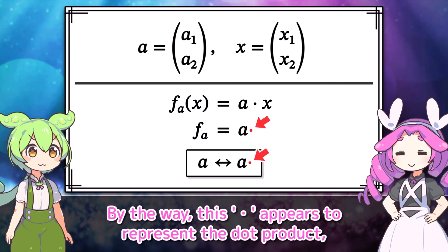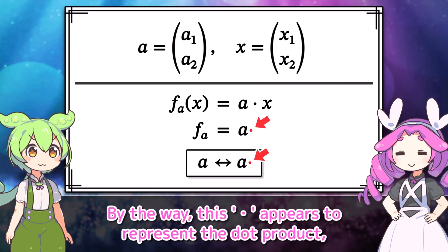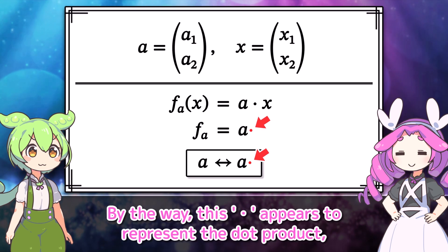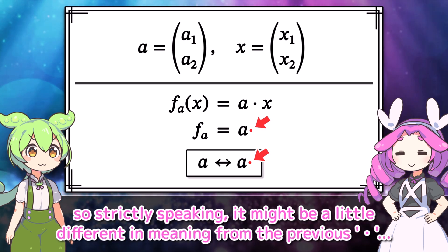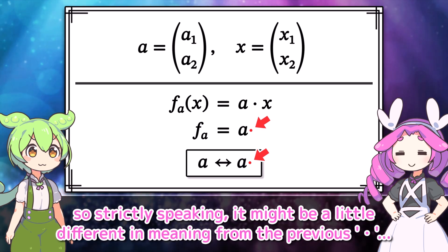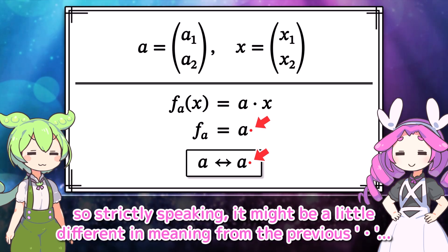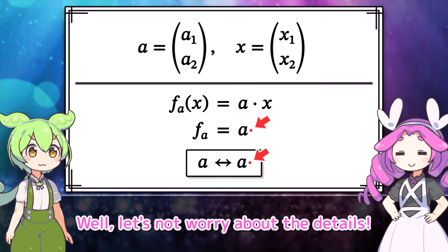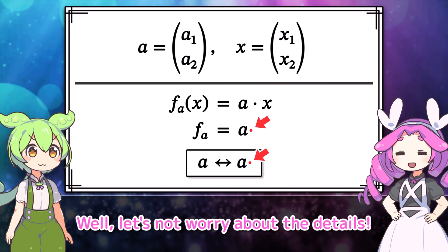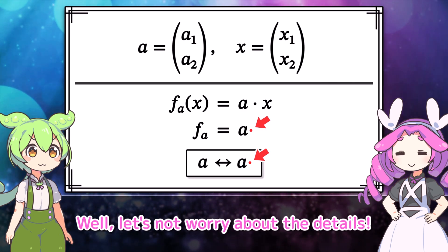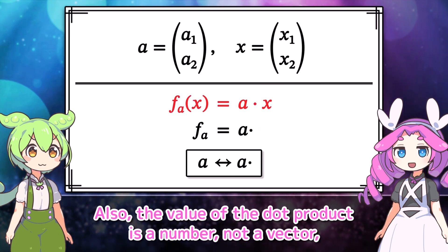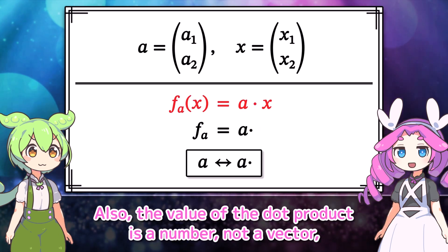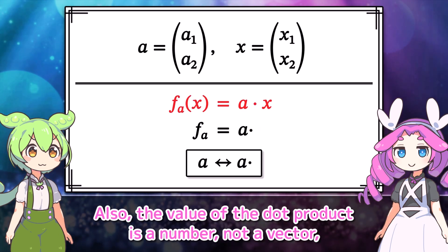By the way, this dot appears to represent the dot product, so strictly speaking it might be a little different in meaning from the previous dot. Well, let's not worry about the details. Also, the value of the dot product is a number, not a vector.